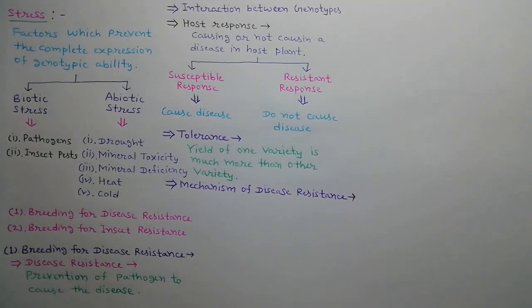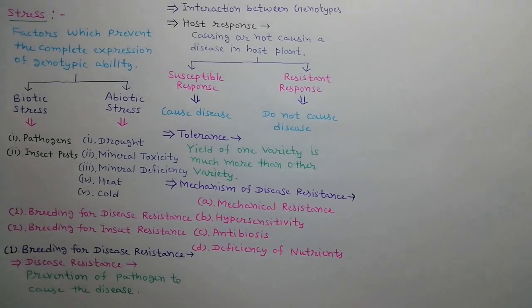Mechanism of disease resistance varies from crop to crop. Here, we describe four common mechanisms: mechanical resistance, hypersensitivity, antibiosis, and deficiency of nutrients.